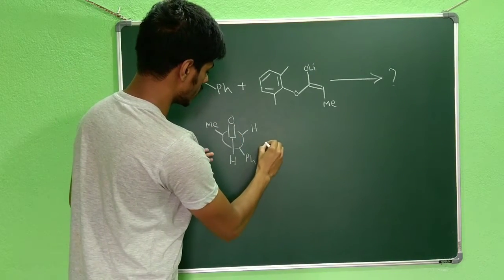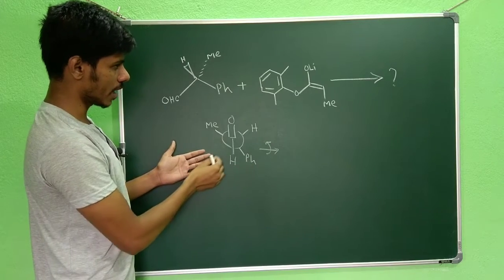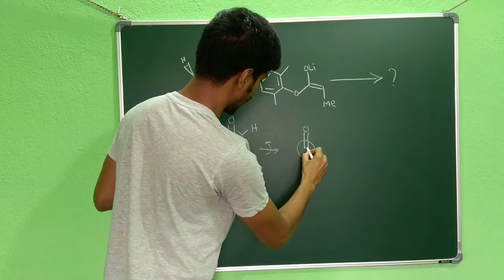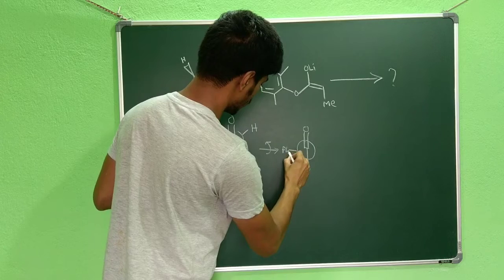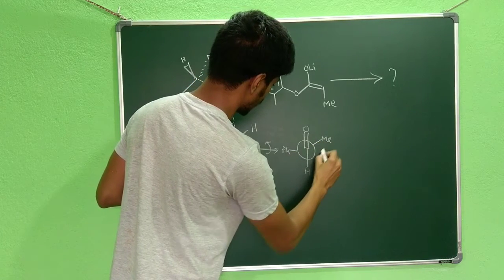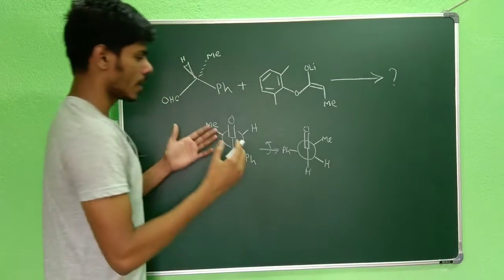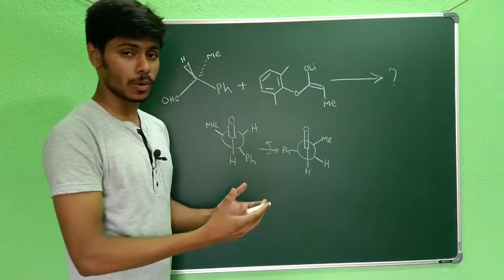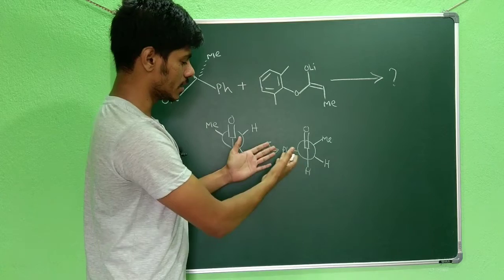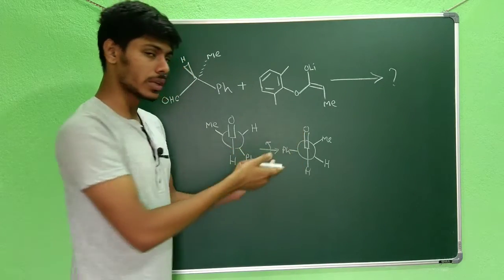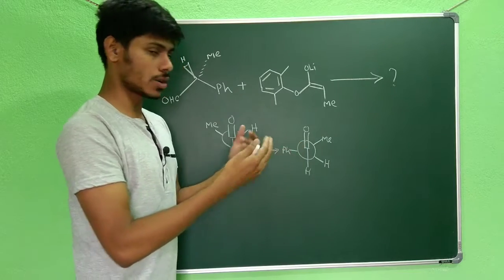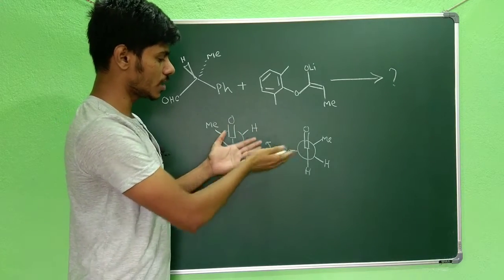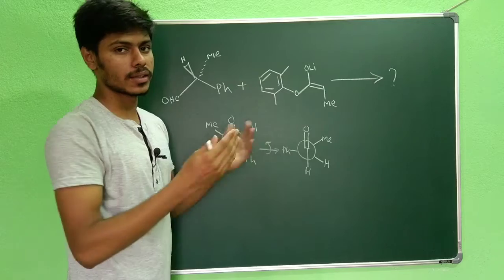Now if we rotate this structure in the clockwise direction, the phenyl group will go here, the methyl will go there, and the hydrogen will come here. This is the most stable conformation as well as the most reactive conformation, because the phenyl group is perpendicular to the carbonyl, allowing interaction with the π* orbital of the carbonyl, making it reactive. At the same time, it is stable because the large group is placed away from both the hydrogen and the oxygen.